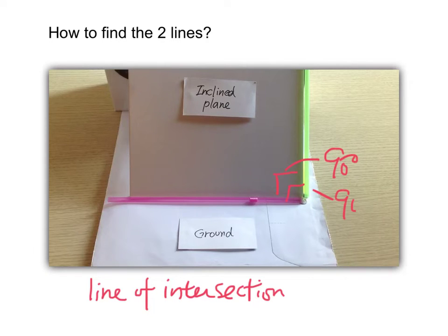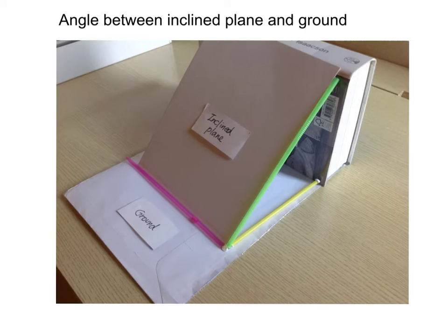And this is our line of intersection. So finally, the angle between the inclined plane and ground will be the angle between these two lines - the green straw and the yellow straw. This is our angle.